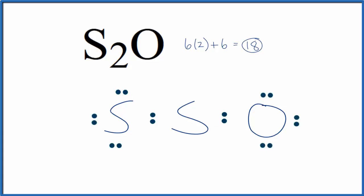At this point we've used 16, we have two more, we'll put them on the sulfur here. So we have octets for both the sulfur and the oxygen here, but the central sulfur, we only have six.